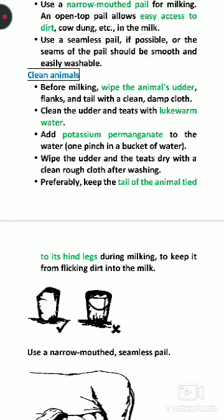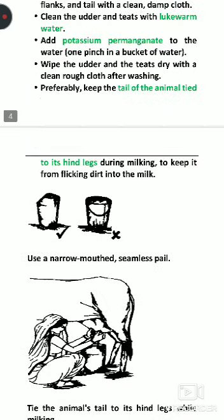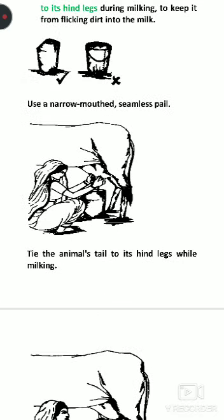The next factor is that the animal should be clean. Wash the animal's udder with water, then wash with potassium permanganate solution. Wipe and dry the udder before milking. If the animal moves its tail during milking, you should tie the tail along with the hind legs to prevent contamination of the milk.